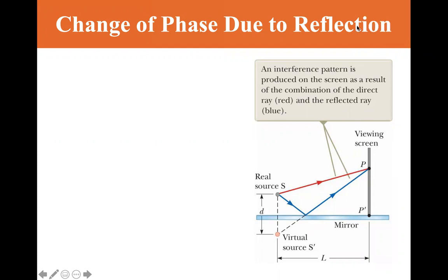Change of phase due to reflection. An interference pattern is produced on the screen as a result of the combination of the direct red ray and the reflected blue ray.